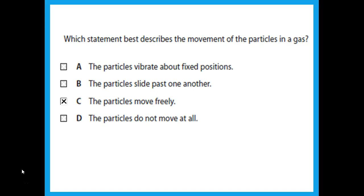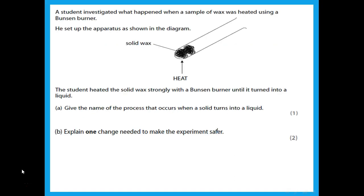A student investigated what happened when a sample of wax was heated using a Bunsen burner. The student heated solid wax strongly until it turned into a liquid. Give the name of the process when a solid turns into a liquid — that is melting.